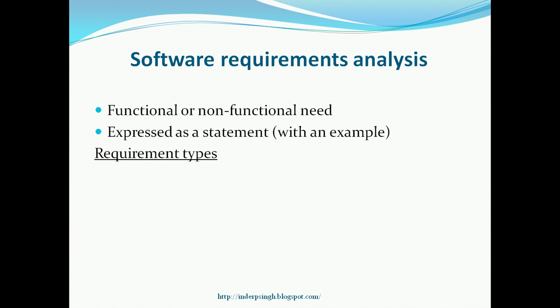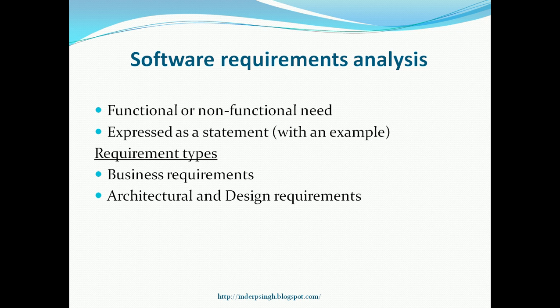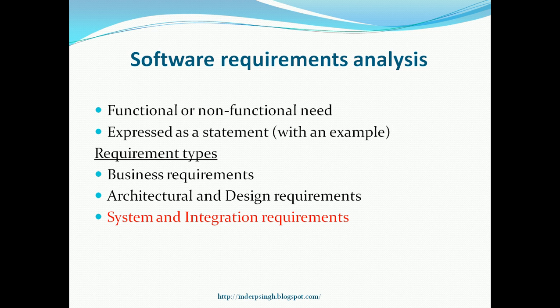Now let us look at different requirement types. First of all, we have business requirements. Business requirements are the high-level requirements taken from the business case for the project. More detailed are the architectural and design requirements that show the overall design required to implement all the business requirements. And the most detailed are the system and integration requirements. System and integration requirements can appear in the form of a system requirement specification, which is the detail of each and every requirement, and it can also come in the form of user stories, which describe the requirements in everyday business language.